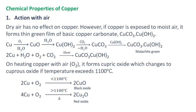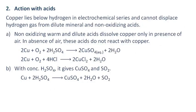Chemical properties of copper. Action with air: Dry air has no effect on copper. However, if copper is exposed to moist air, it forms a thin green film of basic copper carbonate, CuCO3·Cu(OH)2, also known as malachite green. On heating copper with oxygen, it forms cupric oxide, which changes to cuprous oxide if temperature exceeds 1100 degrees Celsius. Action with acids: Copper lies below hydrogen in the electrochemical series and cannot displace hydrogen gas from dilute mineral and non-oxidizing acids. Non-oxidizing warm and dilute acids dissolve copper only in presence of air.